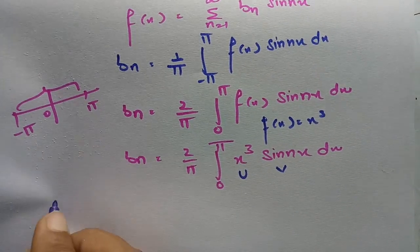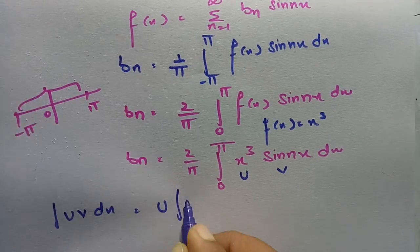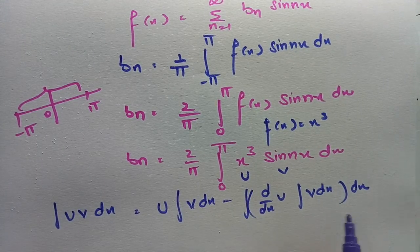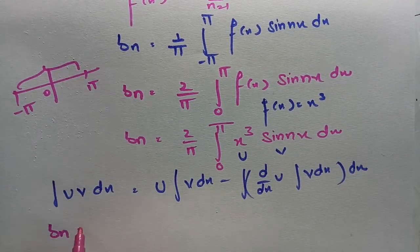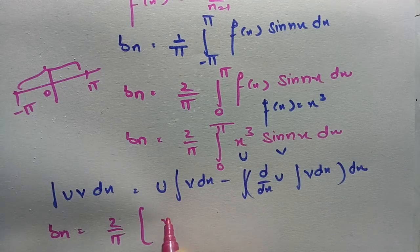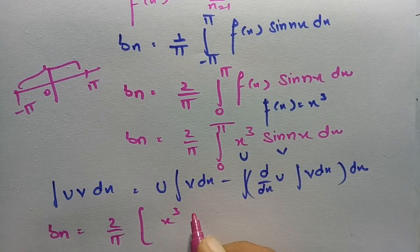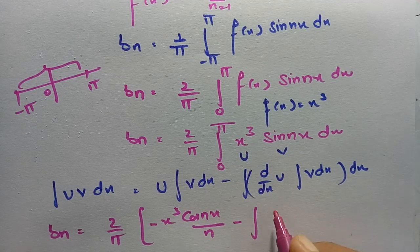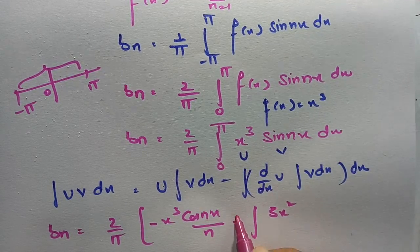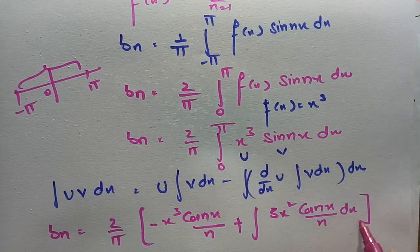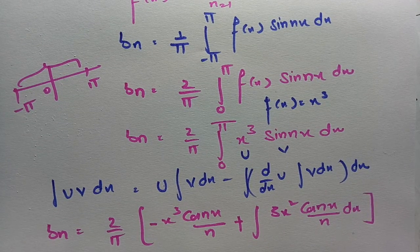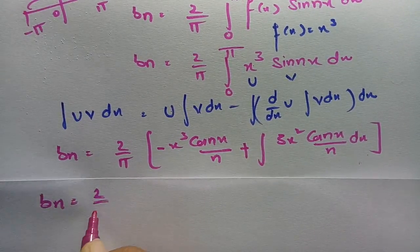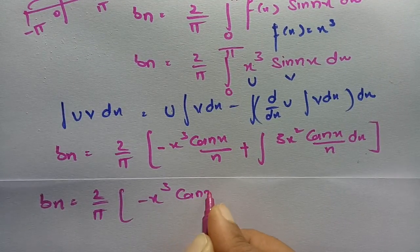We apply integration by parts: ∫u·v dx = u·∫v dx − ∫(du/dx · ∫v dx) dx. Taking u = x³ and v = sin(nx), we leave u and integrate v. Integration of sin(nx) gives −cos(nx)/n. So bₙ = (2/π) [ x³·(−cos(nx)/n) − ∫ 3x²·(−cos(nx)/n) dx ].